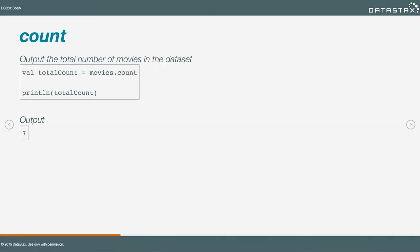Count — it doesn't get a lot easier than this. We take our RDD, count its elements, and get the number as a result.